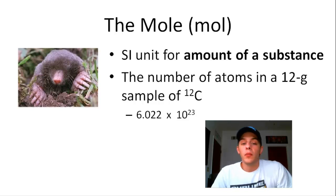So if you have a mole of anything, you have 6.022 times 10 to the 23rd of that thing. A mole of pennies would be 6.022 times 10 to the 23rd pennies. A mole of eggs would be 6.022 times 10 to the 23rd eggs. And so on and so forth.